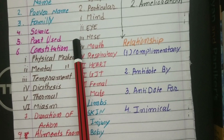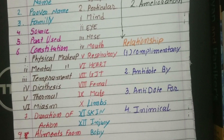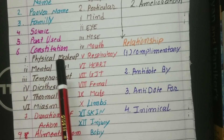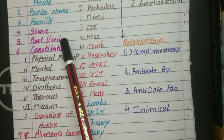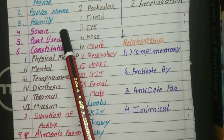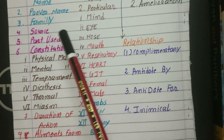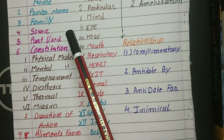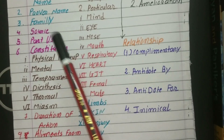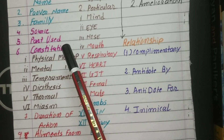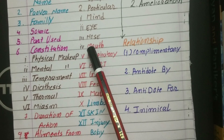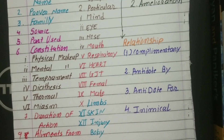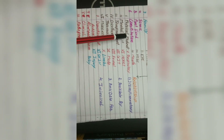Part used means, for example, if we are writing about a vegetable kingdom drug, which part of the plant is used? Most vegetable kingdom drugs don't use the whole plant — only certain parts like leaves or flowers are used. You also have to note which time we should take it. Then you have to write the constitution.